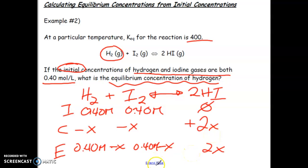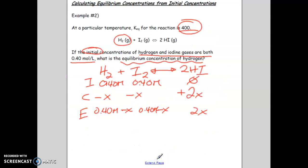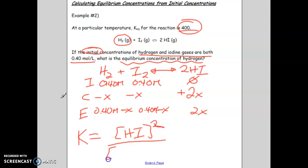So here we have a slightly different scenario. Normally at this point you would have been told something at equilibrium — say, the equilibrium concentration for HI — and you would equate that to 2x and solve for x. But in this situation we are told nothing like that; instead we have our K value, which is going to become important. So let's set up a K expression: products squared over reactants.